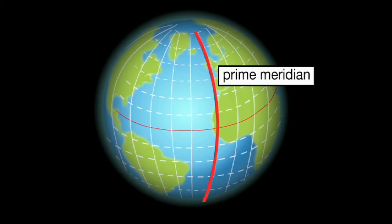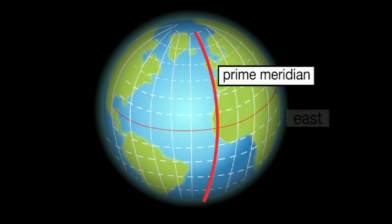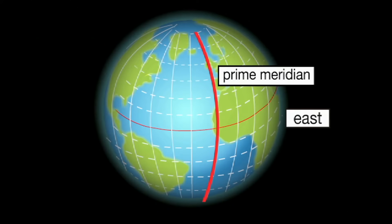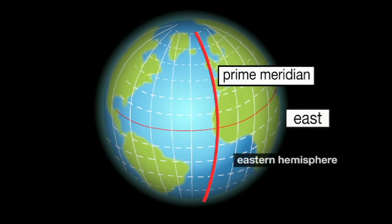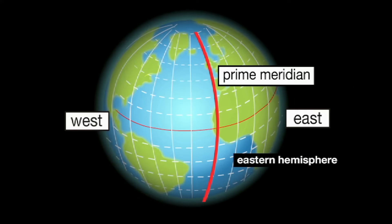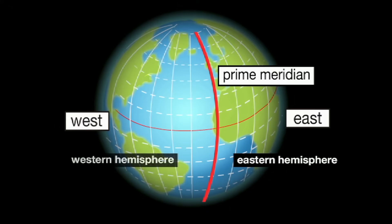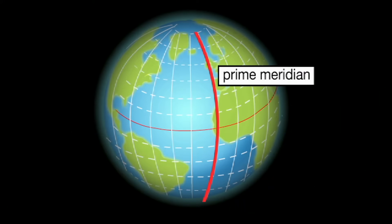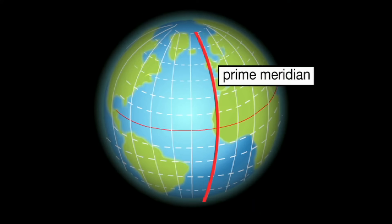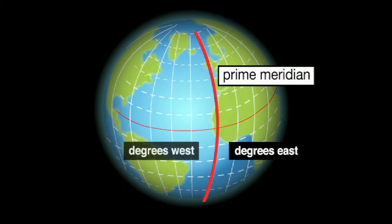The prime meridian divides the Earth into halves called hemispheres as well. The half of the Earth to the east of the prime meridian is called the eastern hemisphere. Everything to the west of the prime meridian is called the western hemisphere. The lines east of the prime meridian are called degrees east, and the lines west are called degrees west.